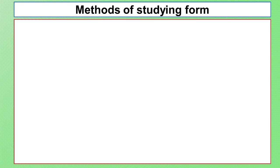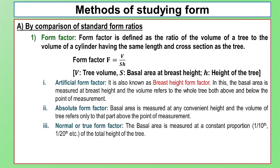There are three methods to study tree form: first, by comparison of standard form ratios; second, by classification of form on the basis of form ratios; and third, by compilation of taper tables.